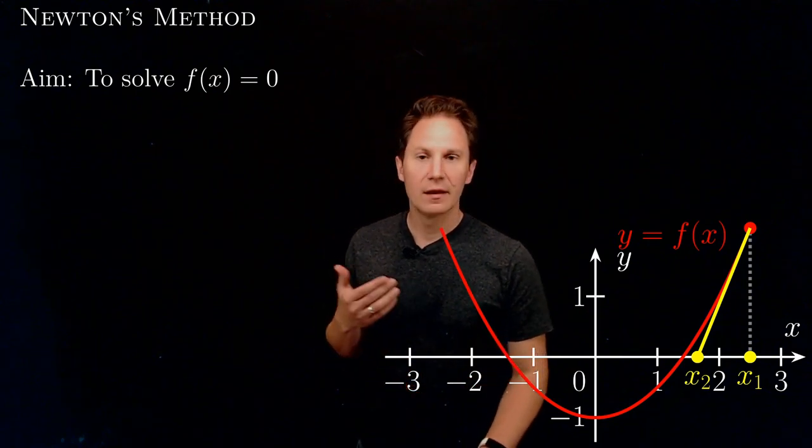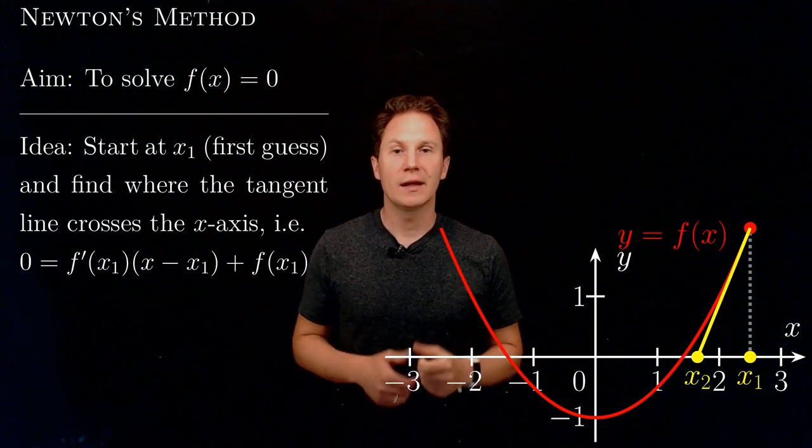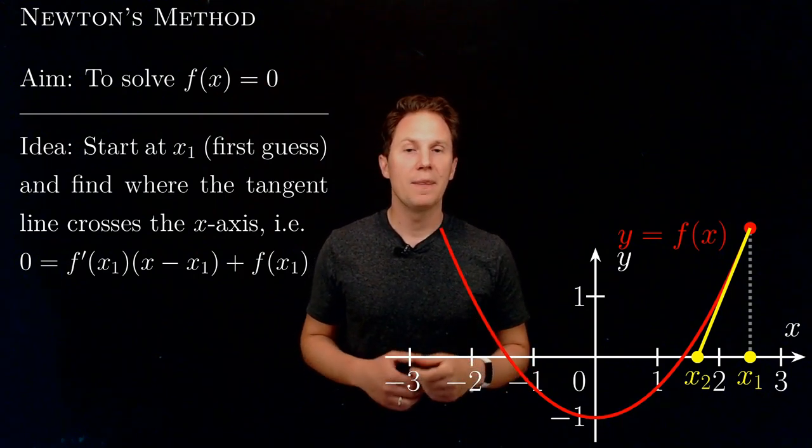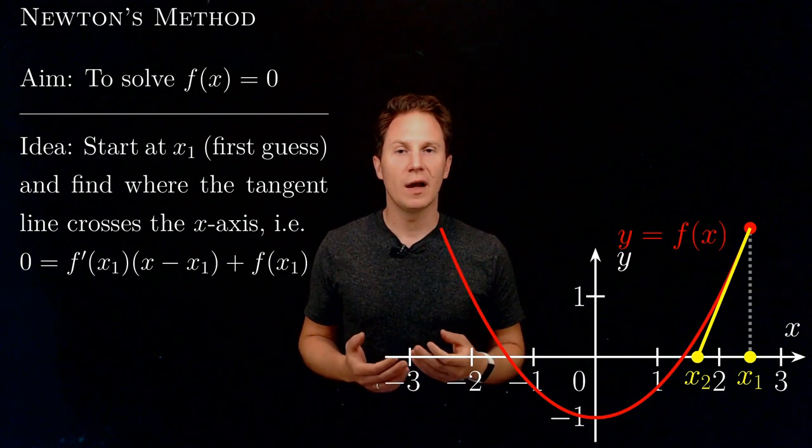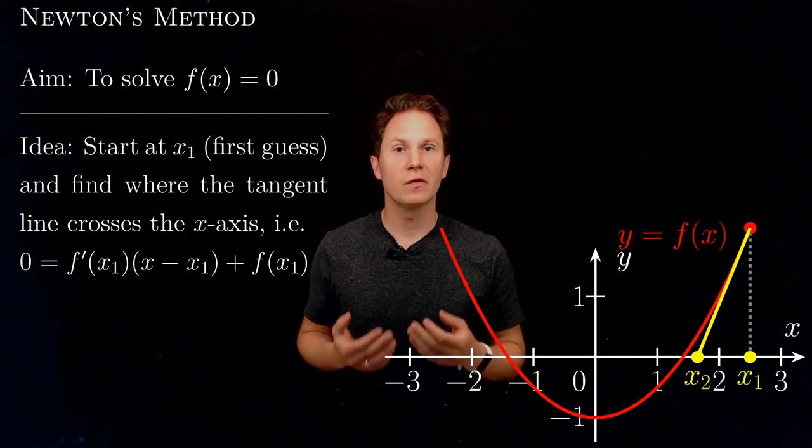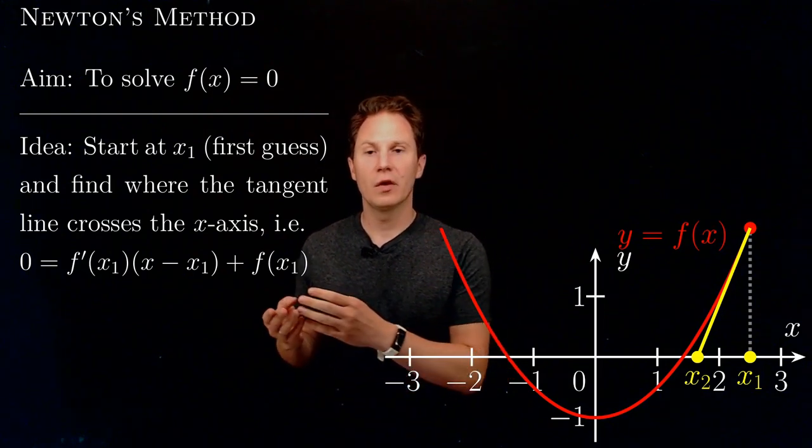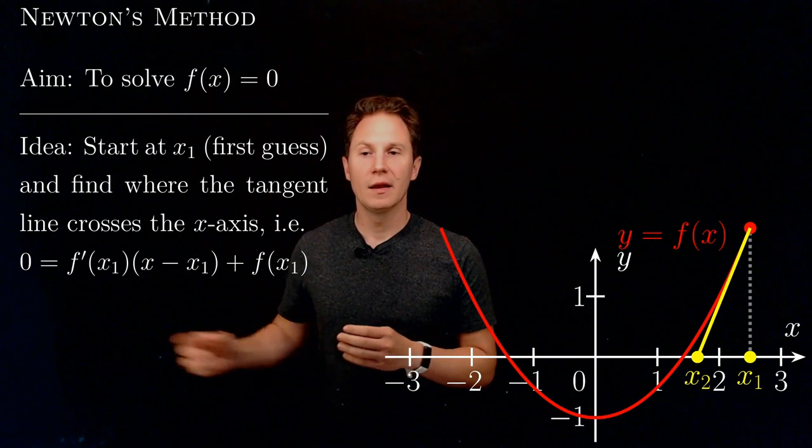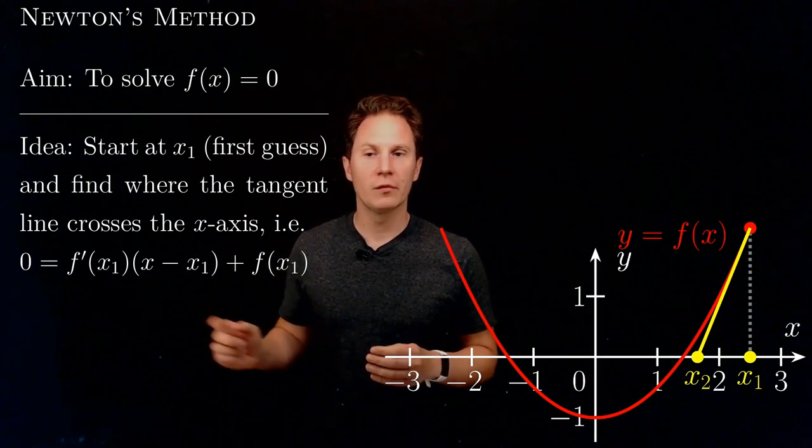So again, the method consists of first taking an initial guess, x₁, and then finding where the tangent line to the graph of the function at the corresponding point crosses the x-axis. That means taking the equation of the tangent line, setting y to zero, and solving for x.